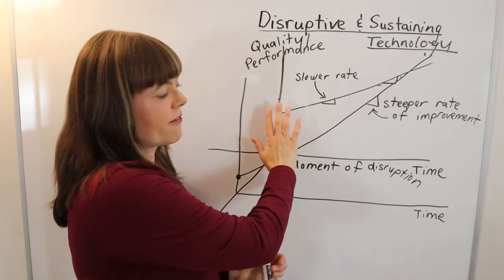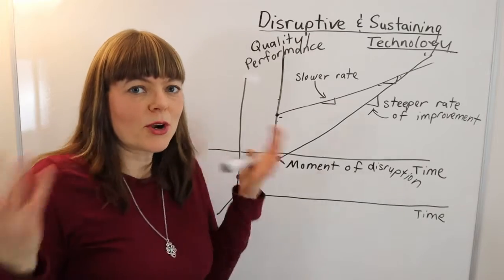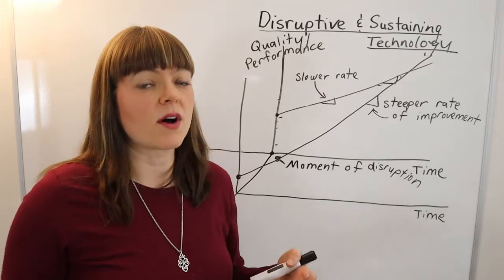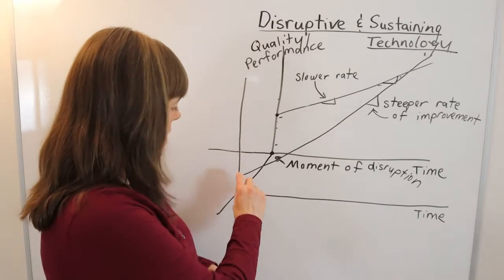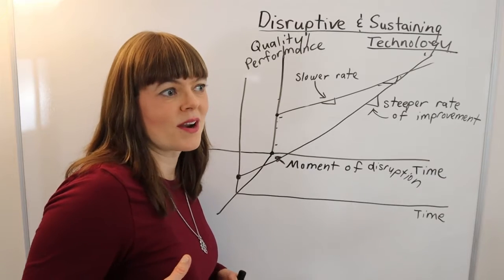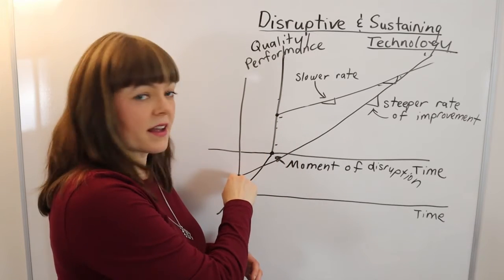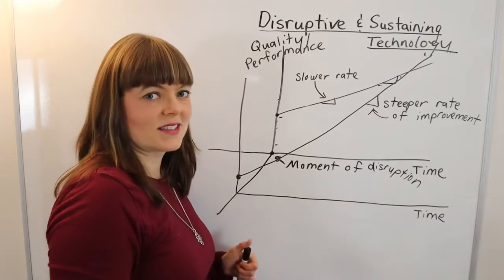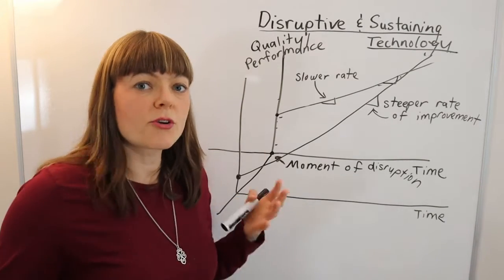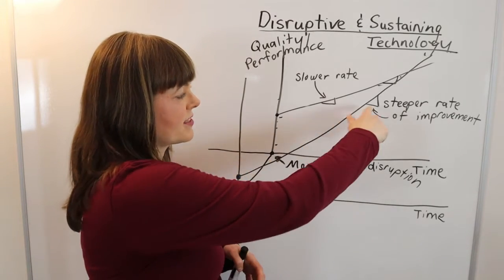The classic example here is: for the old technology we had the big computer that took up three rooms; for the new technology we have the personal computer, which when first invented is much smaller and much lower quality than the fancy three-room computer, but it's more broadly accessible. Many more businesses and people can own a personal computer. And once the personal computer is invented — even though it's a step down in quality — it's a step up in how cheap and accessible it is. With more people owning that technology, that broader base of the public will innovate to make the personal computer improve at a faster rate.